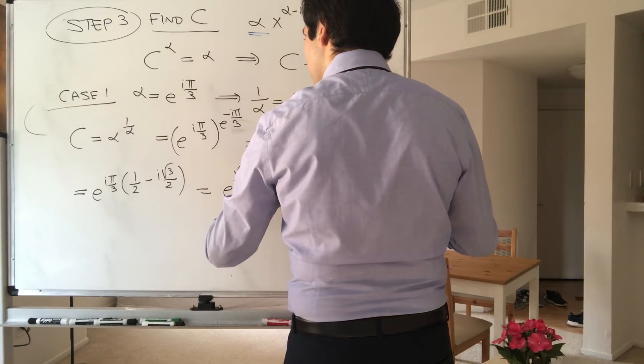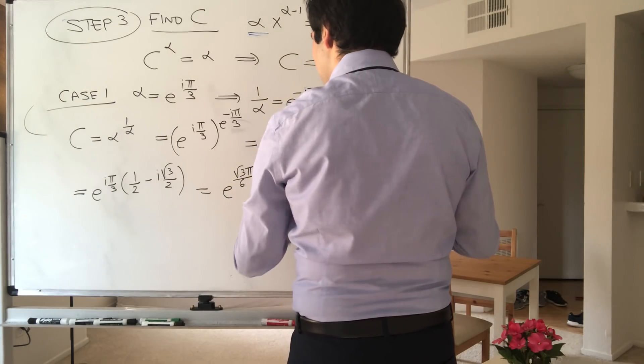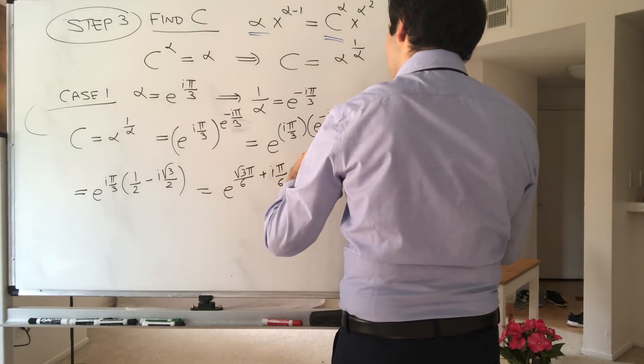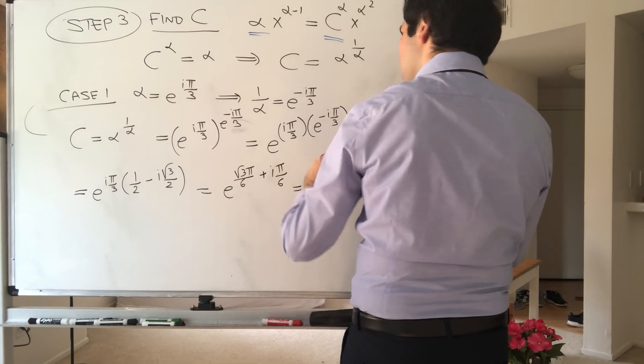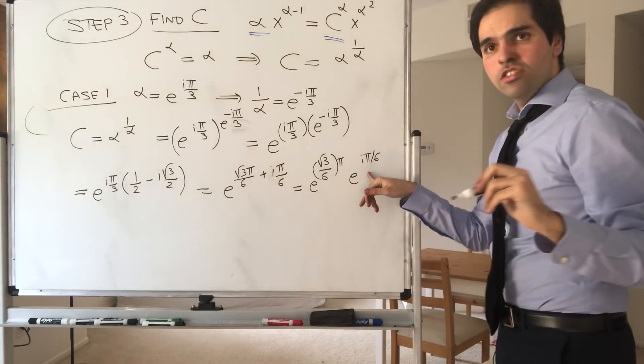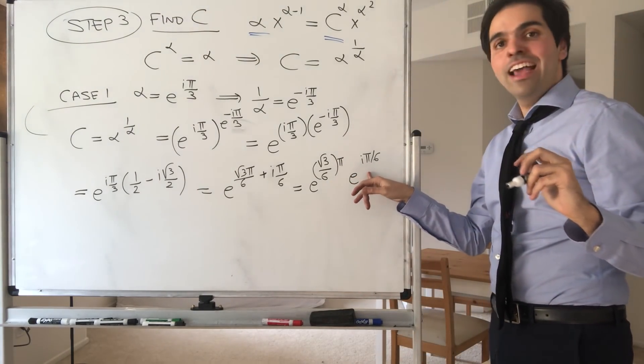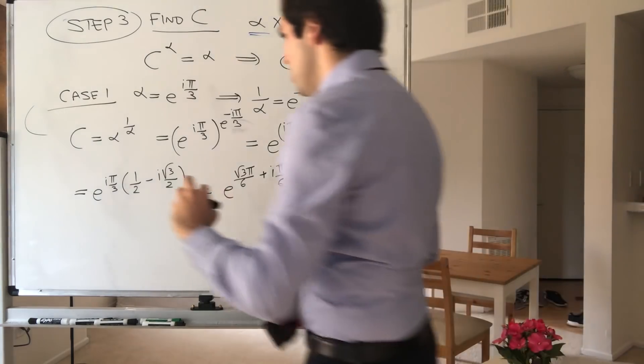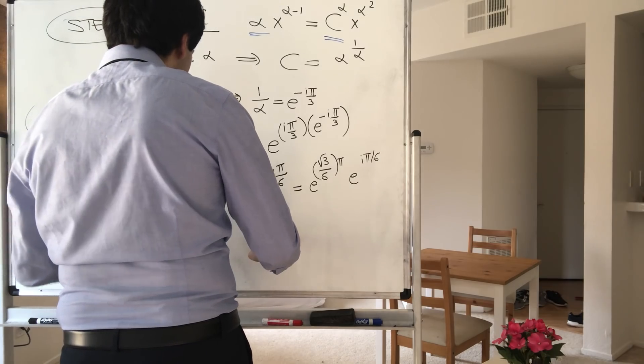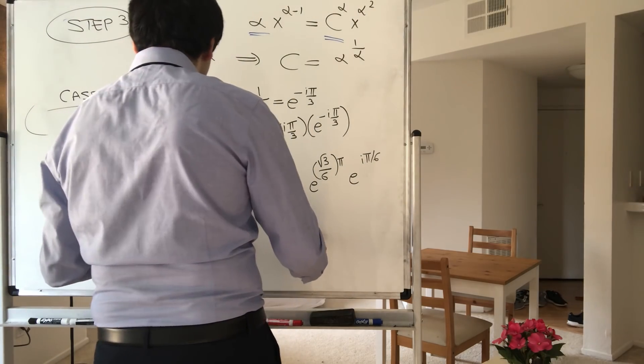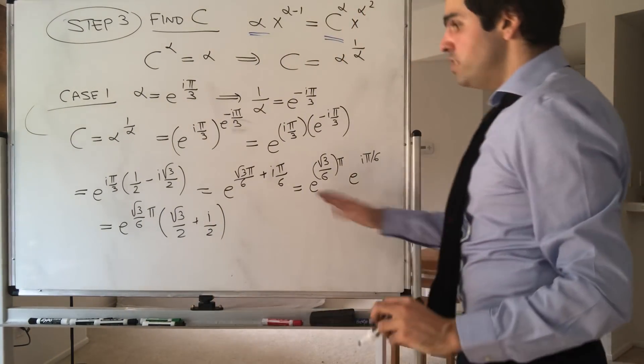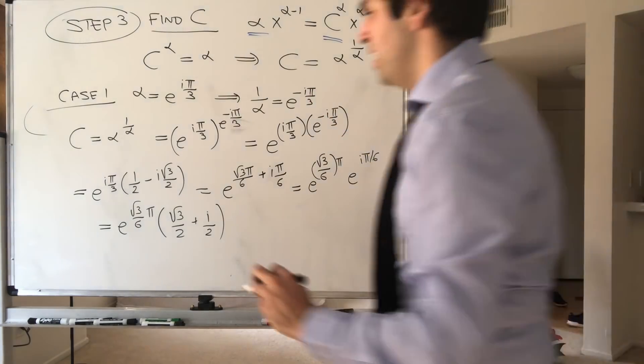And then times, or 1 plus, e to the plus i pi over 6. So you're left with e to the square root of 3 over 6 pi times e to the i pi over 6. But that's just cosine of pi over 6 plus i sine of pi over 6. So you're left with e to the, again, square root of 3 over 6 pi times square root of 3 over 2 plus i over 2. So this gives you c, and finally, you have your answer.